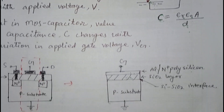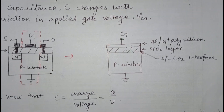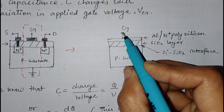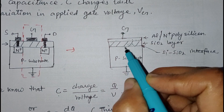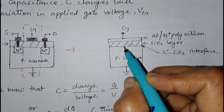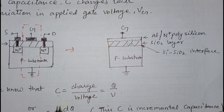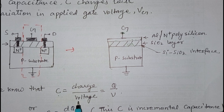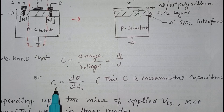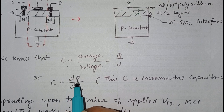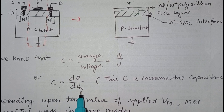We can observe that there is no voltage expression in that formula, so the capacitance in this case does not depend upon the voltage. But the case is different for MOS capacitor. Here, when we apply voltage at the gate, the capacitance varies according to the charge developed, so the capacitance is given by charge upon voltage.